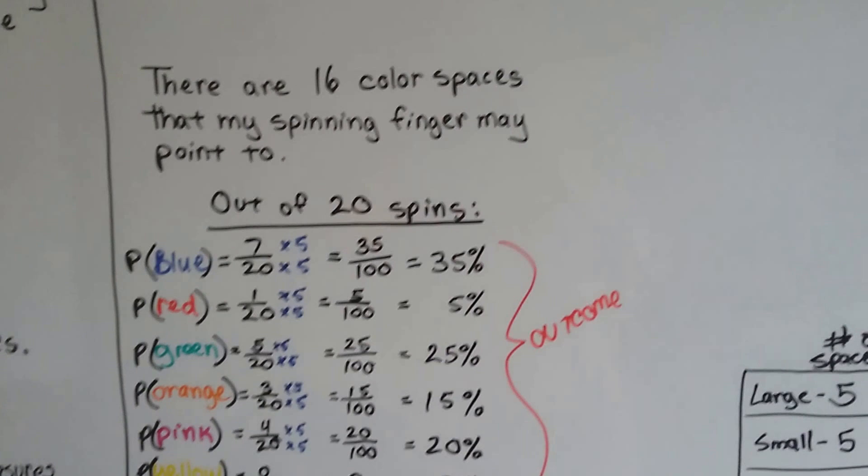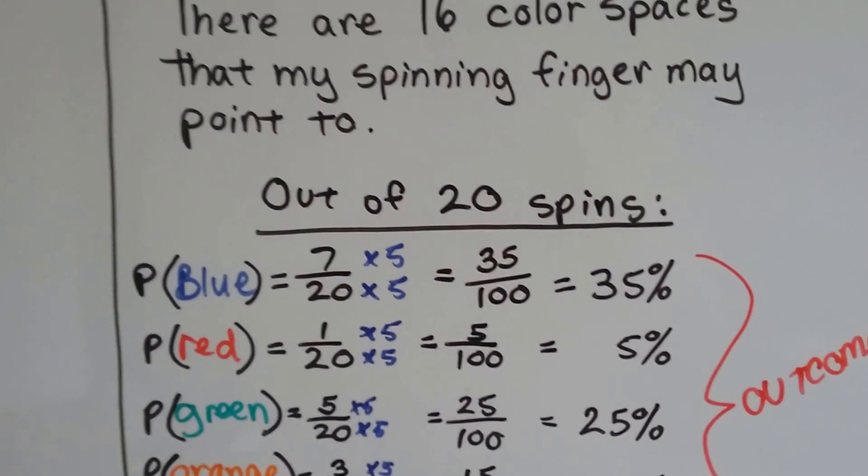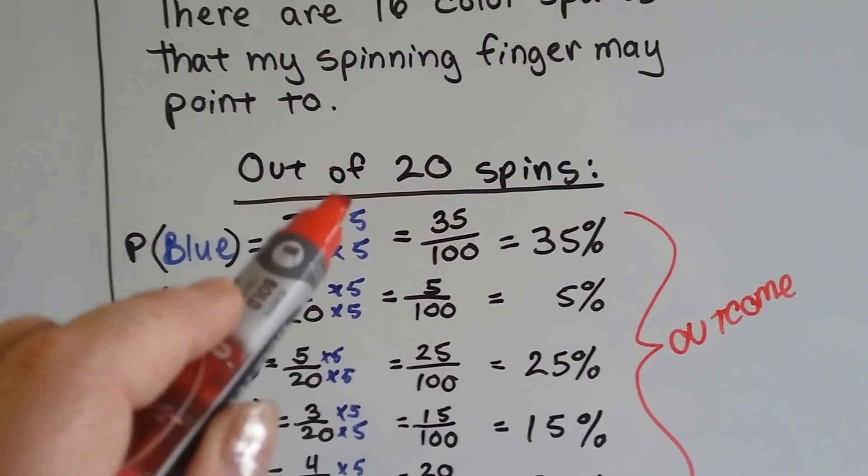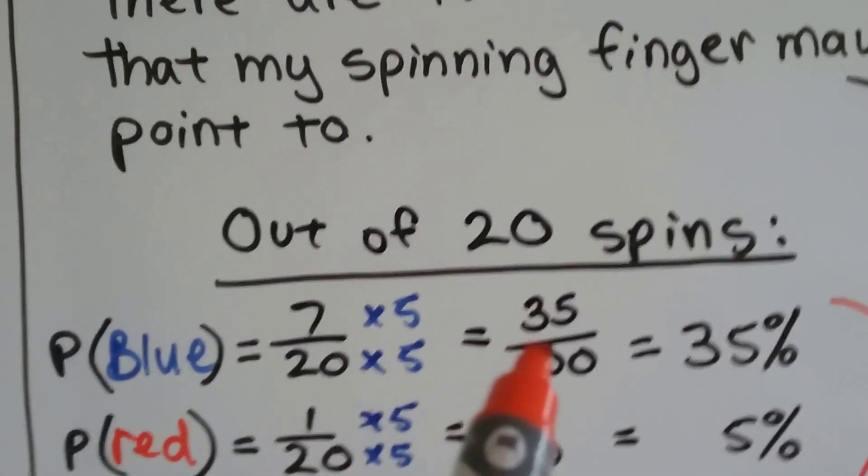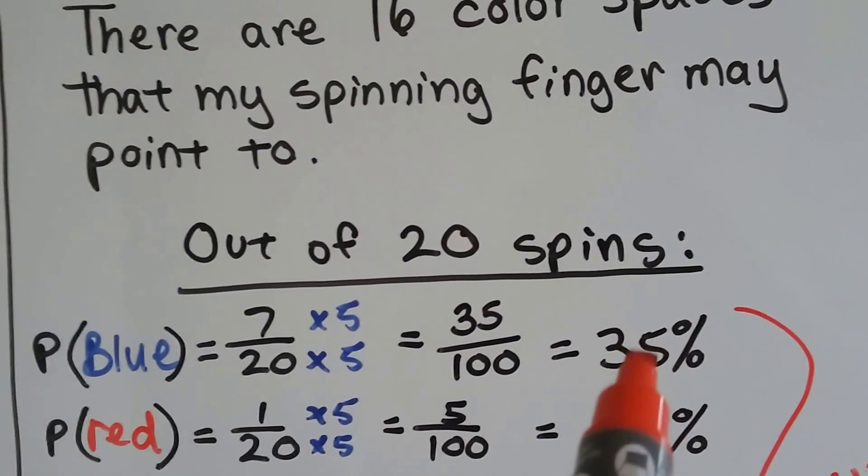So there are 16 color spaces that my spinning finger pointed to. It landed on the blue seven times out of the 20 spins. I multiply the numerator and denominator by five to get it to be part of 100, and it becomes 35 over 100, or 35% of the time it landed on the blue.